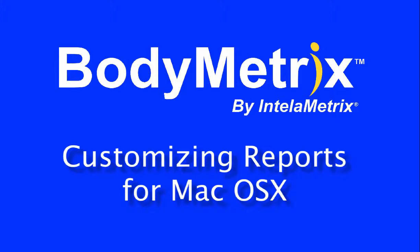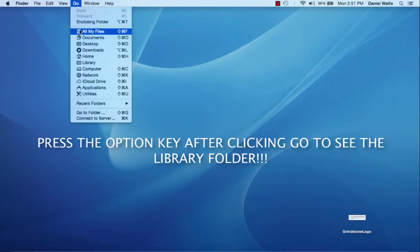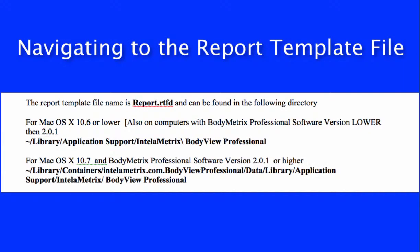The first thing you need to do is navigate to the Library folder. Now these folders are normally hidden, so from your Finder menu, click on Go and press the Option key. You'll see the Library folder appear.